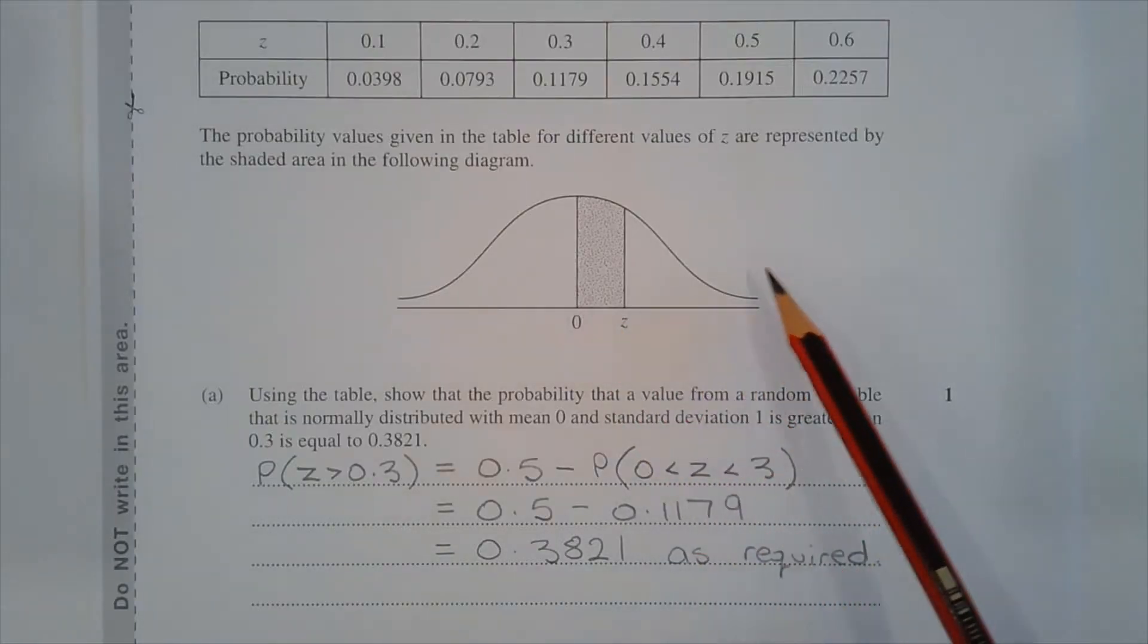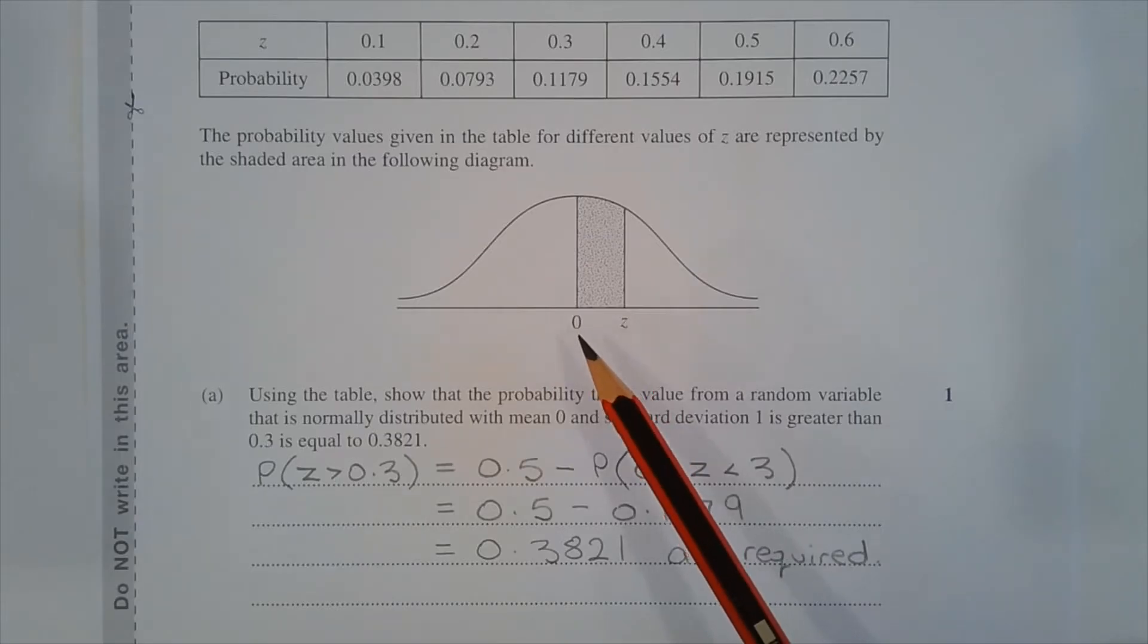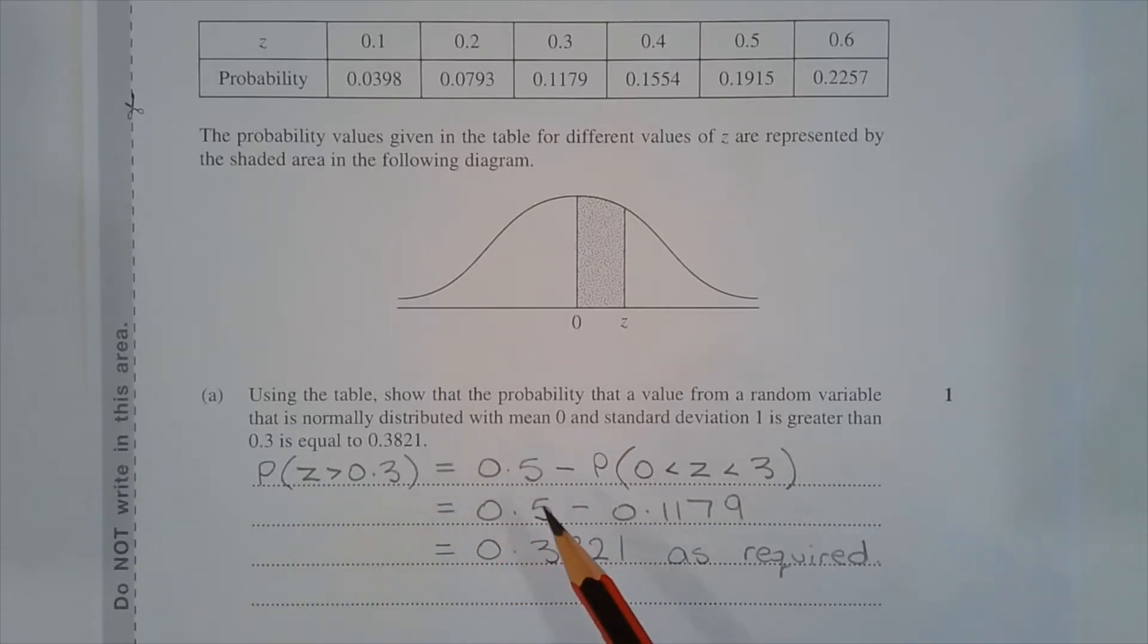The area under the normal distribution above z equals 0 is equal to 0.5. The probability that z is greater than 0.3 equals 0.5 minus the probability that z lies between 0 and 0.3.